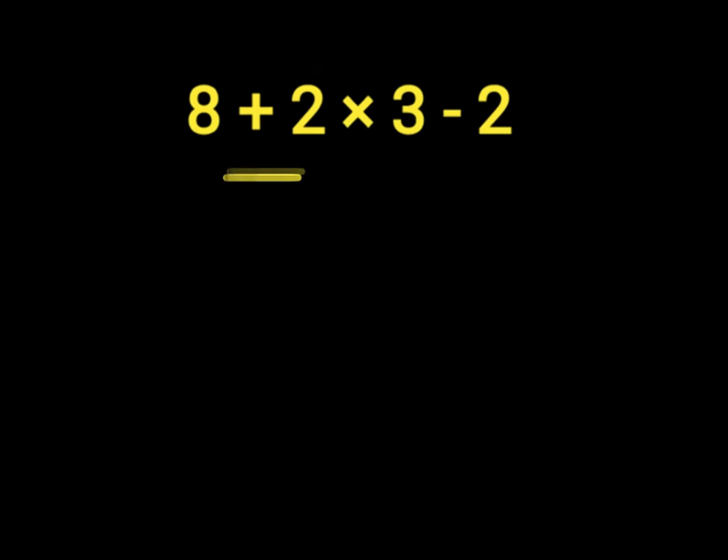So 8 plus 2 will give us 10. Then we have 10 times 3 minus 2. 10 times 3 will give us 30. So 30 minus 2 will give us 28.